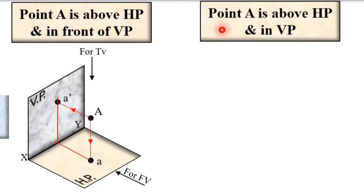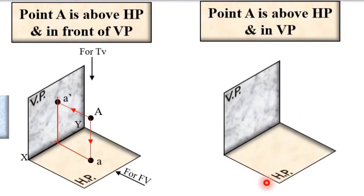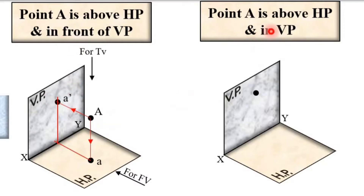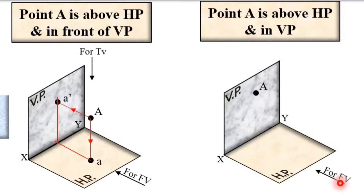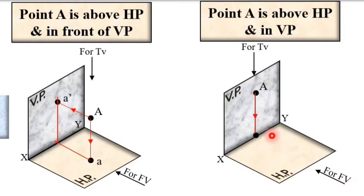Now consider Case 2: point A is above HP and in VP. This is very interesting. Here is HP and VP with the XY reference line. Point A is above HP but it is in VP — whereas in Case 1 it was in front of VP. Draw the projection: for the top view the projection is on HP, denoted by A; and for the front view the projection is on VP, denoted by A dash.